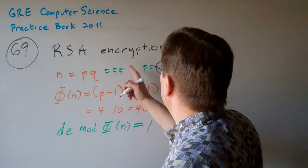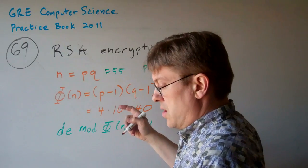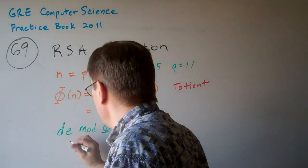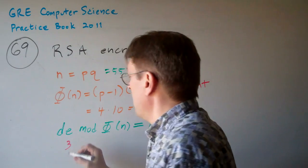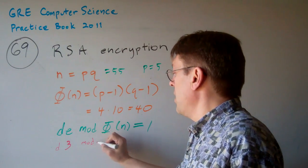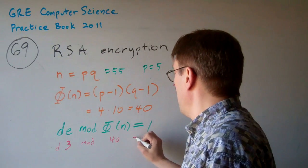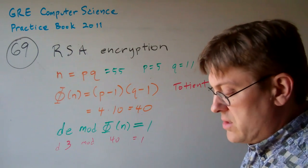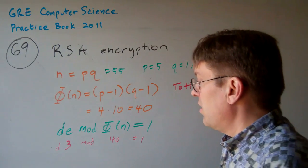So we know that E is 3. We don't know what D is, but it's something mod 40 equals 1. And if you look through the answers, it's not really too complicated to figure out.